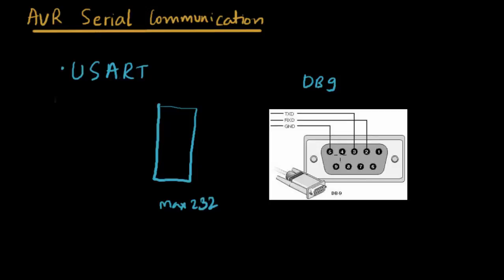The computer's serial communication works on different voltages. The computer treats the RX and TX line as logic one if it is between minus 3 to minus 18 volts, and logic zero if it is between plus 3 to plus 18 volts. This is from a previous generation of computers, and the port is now obsolete. If you need to use it, you need a level shifter IC like the MAX232, which converts those voltage levels to CMOS levels — 0 and 5 volts for logic 0 and logic 1.